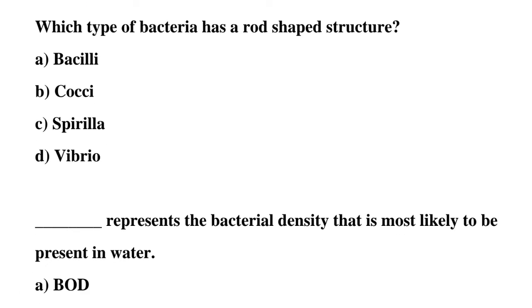Next question: which type of bacteria has a rod-shaped structure? Option A: bacilli, option B: cocci, option C: spirilla, option D: vibrio. The correct answer is option A: bacilli.